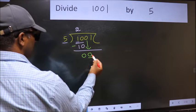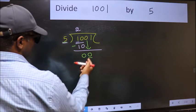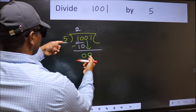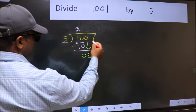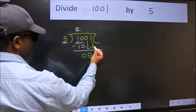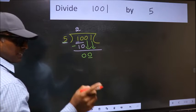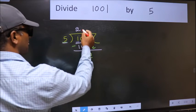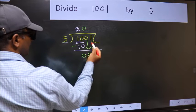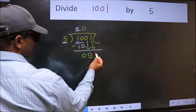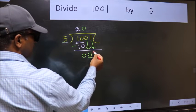Now here we have 0 and here 5. 0 is smaller than 5. So we should bring down the second number. And the rule to bring down the second number is we should put 0 here. Then only we can bring this number down.